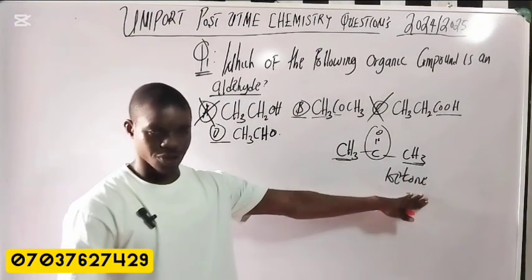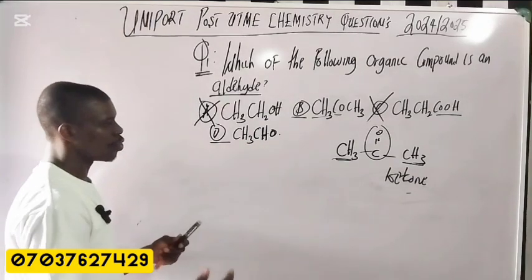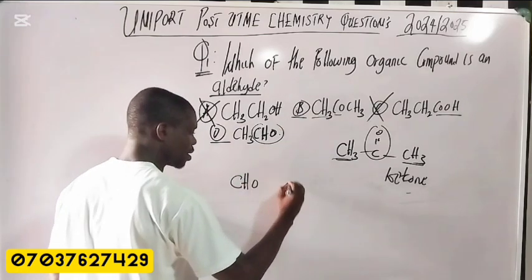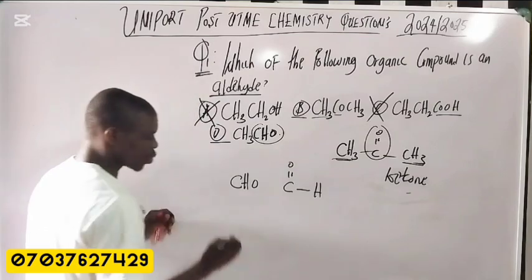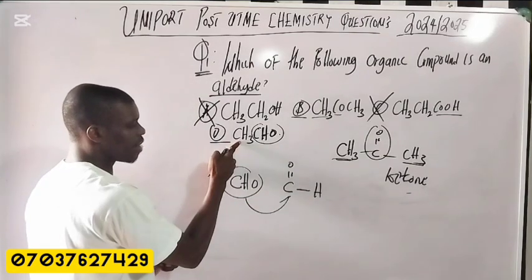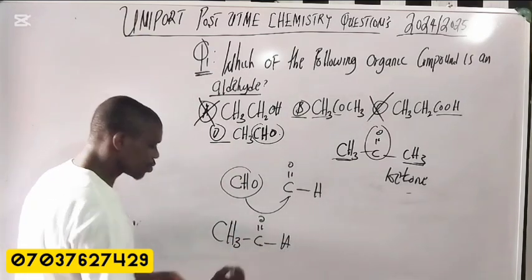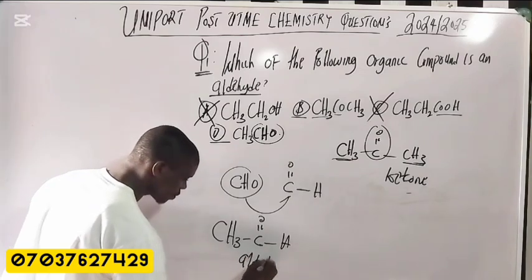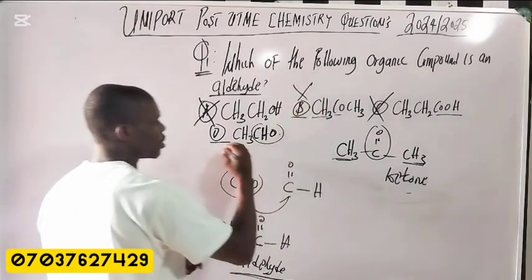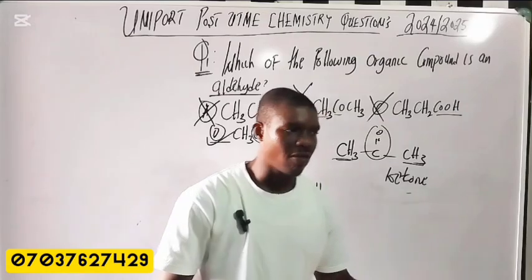Looking at option B — CH3-C(=O)-H — you can see C=O with hydrogen attached, so this is an aldehyde. This is the aldehyde functional group. So B is an aldehyde, meaning B is not the answer. D is the answer — D is what is the ketone, and the question asked for the aldehyde, so D is the odd one out.